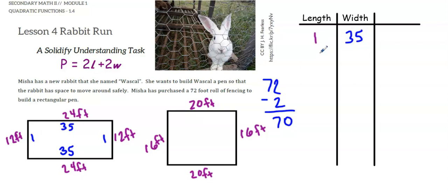If my length was 2, and I use 2 feet of fencing here, 2 feet of fencing here, that makes a total of 4 feet of fencing, leaving me with 68 feet of fencing to be split to two different sides. So I'd have 34 feet of fencing here and 34 feet there.